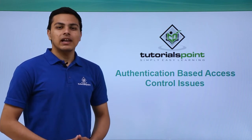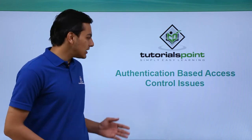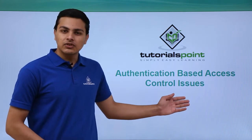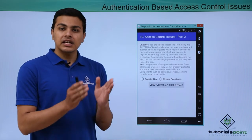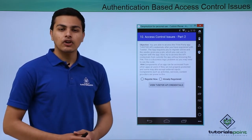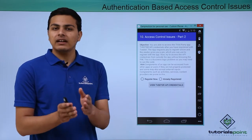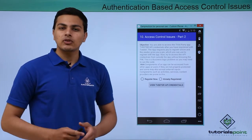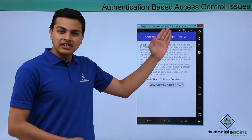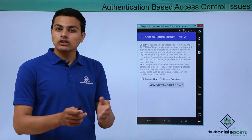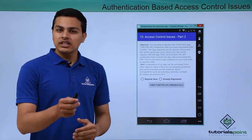In this video we will have a look at another security issue in Android called authentication-based access control issues. This issue arises when an application is performing authentication checks but an attacker can somehow still access the protected resource, resulting in an authentication-based access control issue. This issue is also present in DIVA, which we will see in this video.